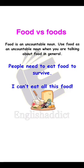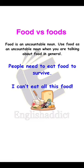لاحظتوا قبل شوي مرات استخدمت food ومرات استخدمت foods مع s — what's the difference between the two? Food is what people and animals eat. Food is an uncountable noun — يعني في الغالب تكون اسم غير معدود. You can't count one food or two foods. Use food as an uncountable noun when you are talking about food in general. مثال: people need to eat food to survive. I can't eat all this food.